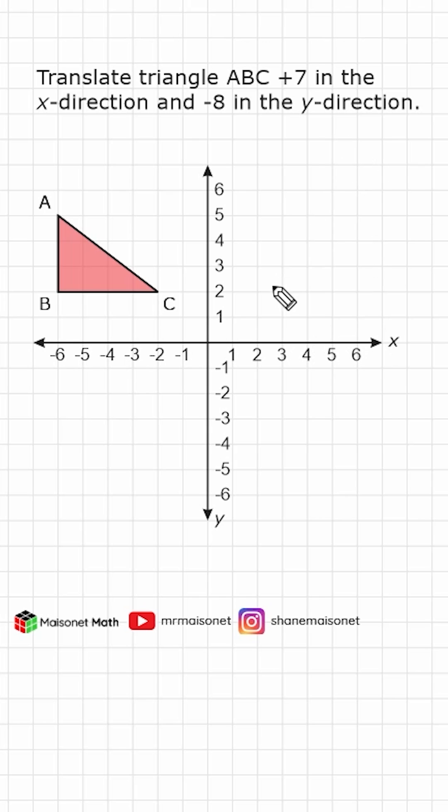And for the y direction, a negative number means you're going to move it down. As we have here, we have negative 8, so we're going to have to move down 8. If it were a positive number, we would have to move it up.